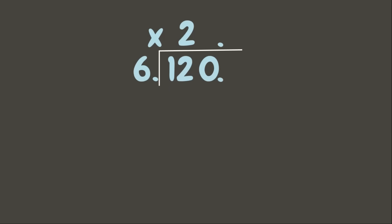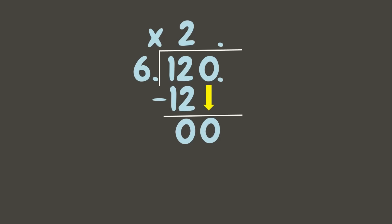2 times 6 is 12. 12 minus 12 is 0. Bring down 0. 0 divided by 6 is 0. 0 times 6 is 0. 0 minus 0 is 0. Our answer is 20. Since it's a whole number, we can already remove the decimal point.